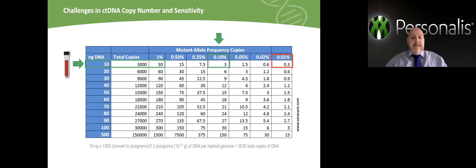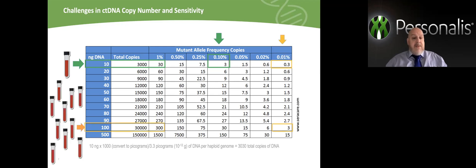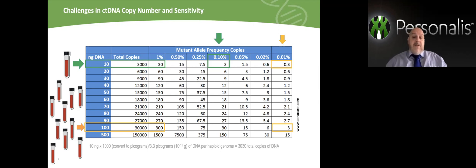This can be bypassed by increasing the input amount. As this data table is a good theoretical overview, we may go back to lab reality. At Personalis, we recommend a minimum of two tubes of blood. With our cfDNA extraction method, we may generate up to 50 nanograms of DNA, which we will apply on our next liquid biopsy platform. Our comprehensive quantification procedure and quality assessment of your input material will place the foundation of your study success.